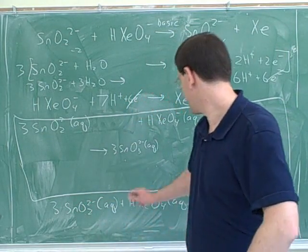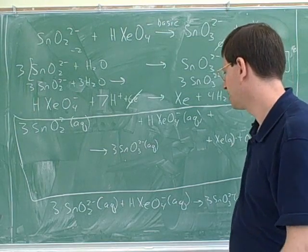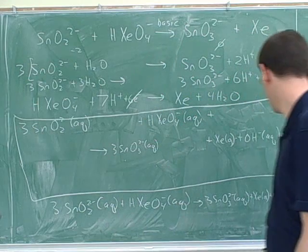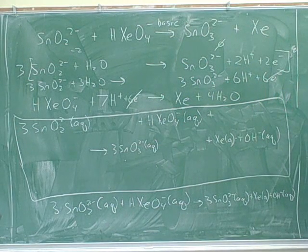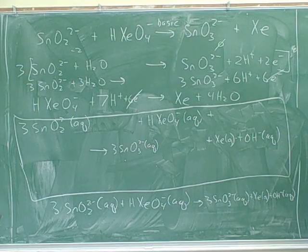Now, we have to check the charges. Three times... What would be the net charge on the left? Six minus... It's seven minus... Negative seven. Three times negative two minus one is negative seven. Now, on the right, it's going to be six minus and one is negative seven. Thank goodness.